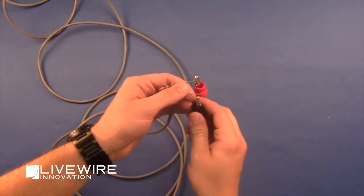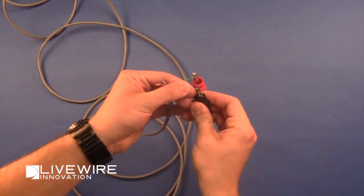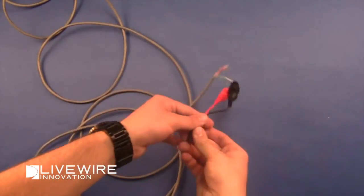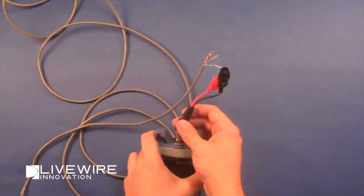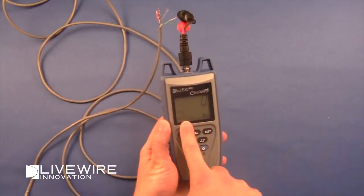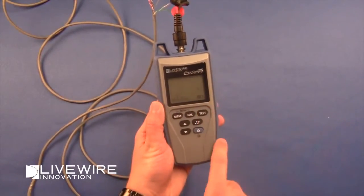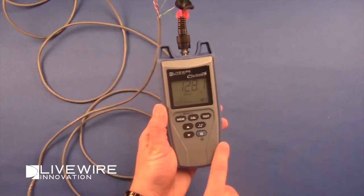In this example, we'll be locating a short circuit in a 500 foot long Cat5 cable. We attach the alligator clips of the connector to two of the wires and enter the NVP value of 66.5. The Fault Chaser tells us that the short is 128 feet away.